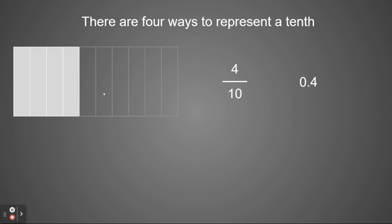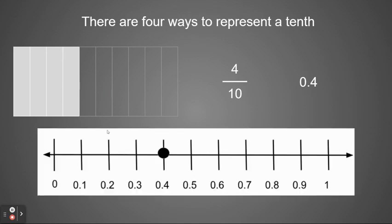The final way you can represent it is on a number line. If I had a number line, I would mark zero and four tenths. This number line starts with zero and goes all the way up to one, so everything that's a decimal is less than one. My point would be zero and four tenths — the fourth spot on the number line between zero and one.